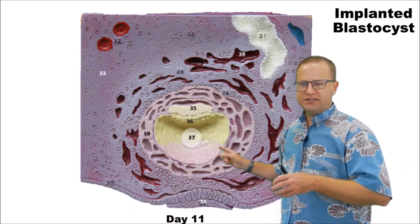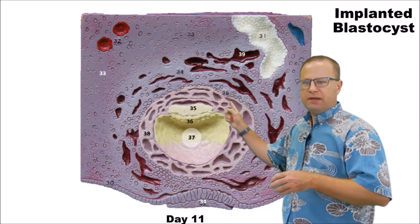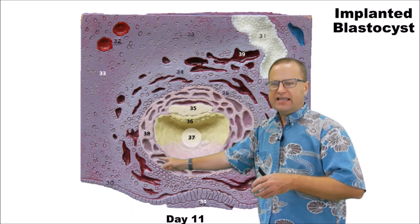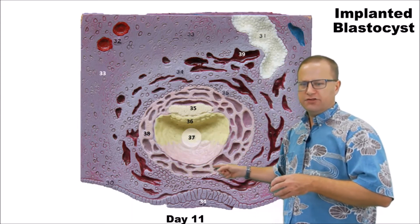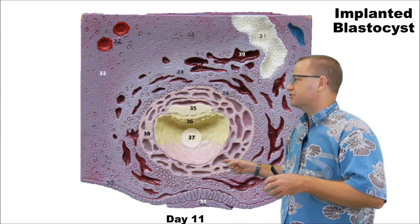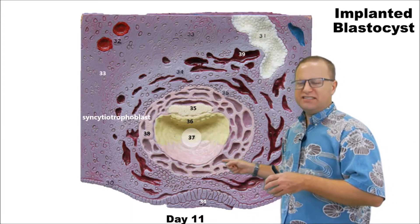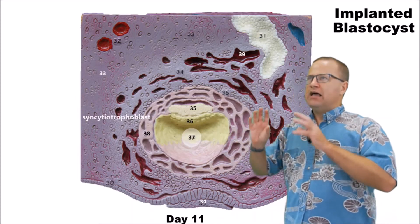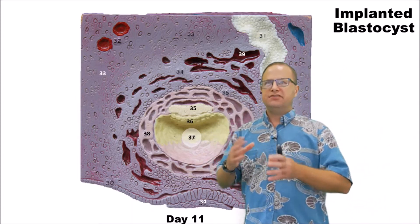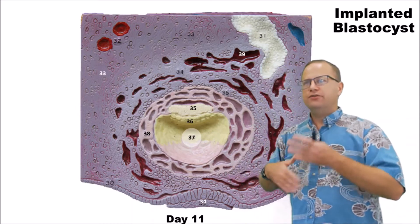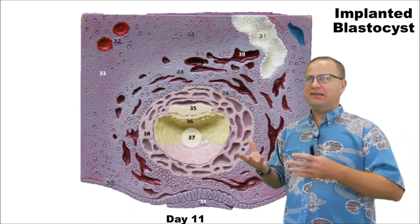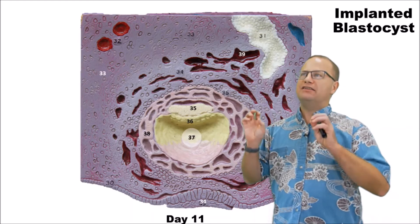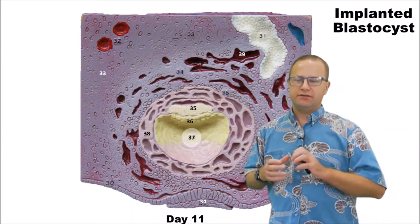Other structures we can see right here — remember this used to be called our trophoblasts, but it has differentiated into a larger more developed structure called the syncytiotrophoblast, and this is literally dissolving away endometrial cells and providing nutrition for that developing blastocyst or embryo until we can form a legitimate placental connection.